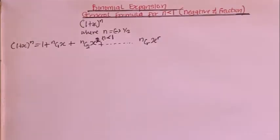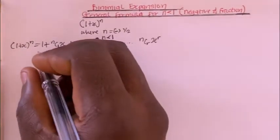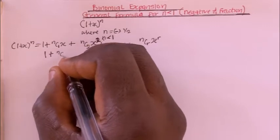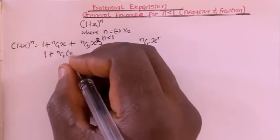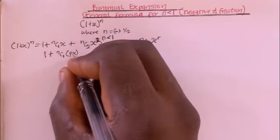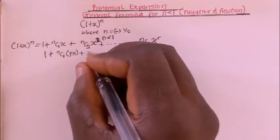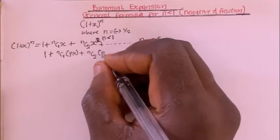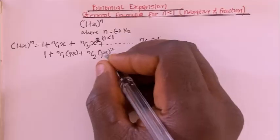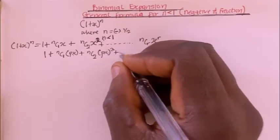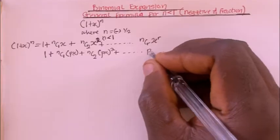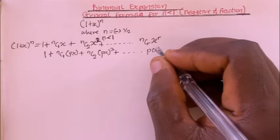We can also represent it as a function of x: 1 plus nC1 times p(x), plus nC2 times p(x) squared, plus other terms up to p(x) to the power of n.